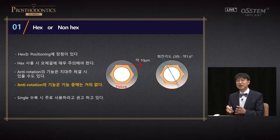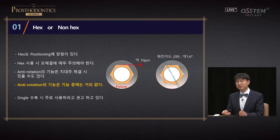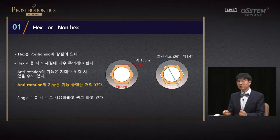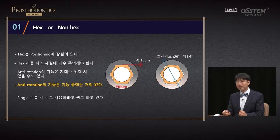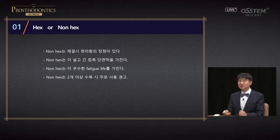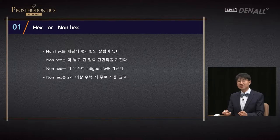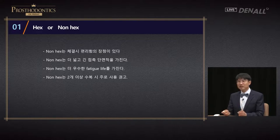The friction on the more steeper area occurs first. The abutment may not rotate even if it does not hit the corner. It is pretty well established to say that there is no anti-rotation function. In single restoration, this is recommended. Now I am going to talk about non-hex abutment. The possibility of error upon connection is much less. Connection is wider because the contact surface is wider. If you look at the research done in Austin, you can get good fracture fatigue life.